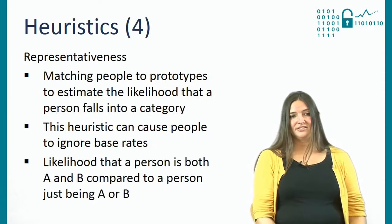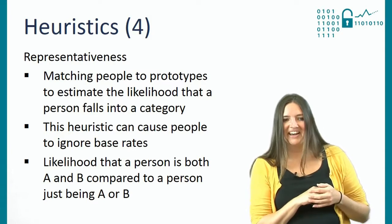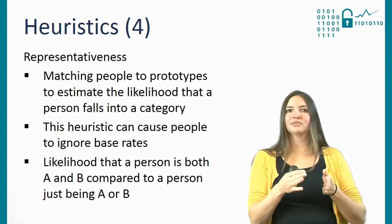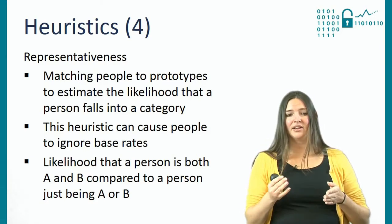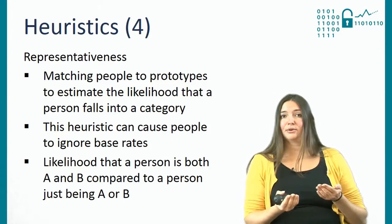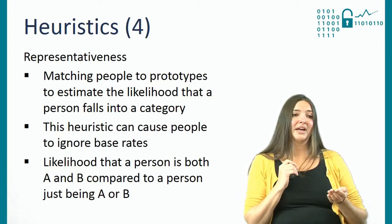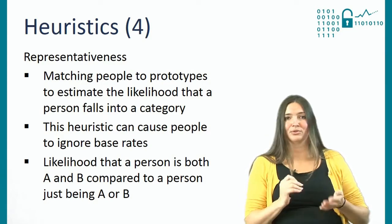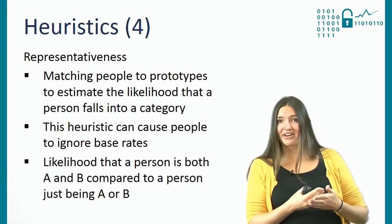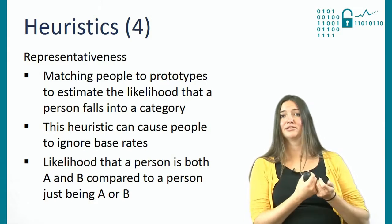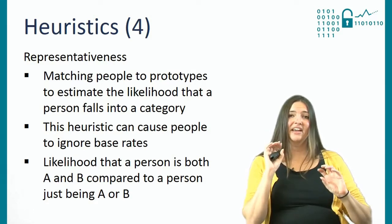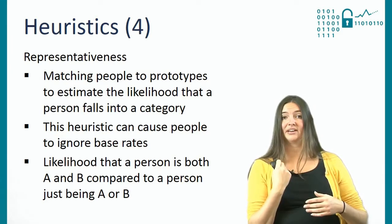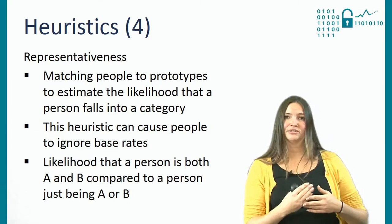The second heuristic we use is the representativeness heuristic, which means that we try to match people to prototypes and estimate the likelihood that a person falls into a certain category. For example, if you read a description about a person who went to university and works in academia, is interested in why people do what they do, always cycles to work, and eats a sandwich with gouda cheese — you are asked to estimate the likelihood of this person being a psychologist or the likelihood that this person is Dutch.